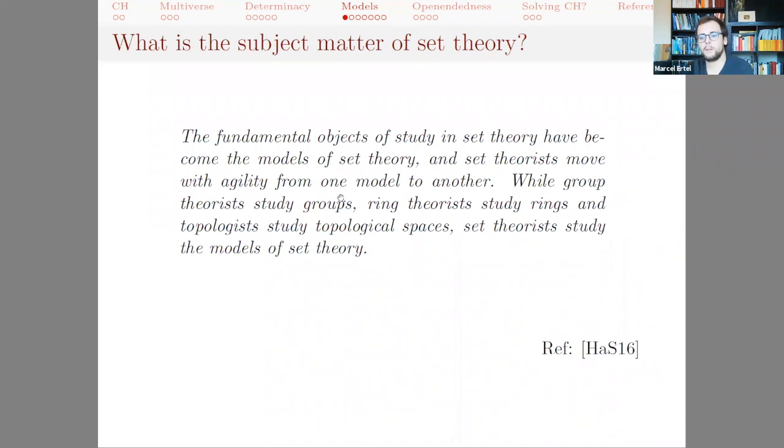But now I want to come back to a point that was already mentioned earlier, and that is that for Hamkins the fundamental object of study in set theory are the models of set theory. So essentially what he's saying is that set theory becomes just a form of model theory, and this I would argue is false, and this would allow us also to come to a more appropriate understanding of the quasi-categoricity results, as I try to argue now.